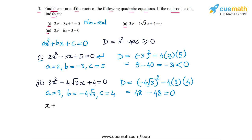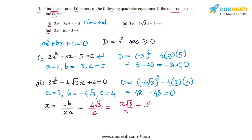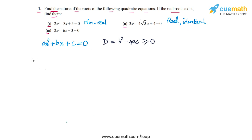The roots will be given by x = (-b ± √discriminant) / 2a. Since the discriminant is 0, this simplifies to x = -b / 2a. So -b = 4√3 and 2a = 2 × 3 = 6, giving x = 4√3 / 6 = 2√3 / 3, or equivalently 2/√3. In part two, the roots are real and identical, both equal to 2/√3.